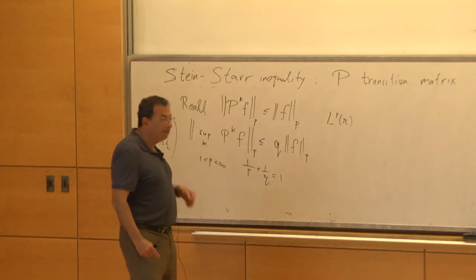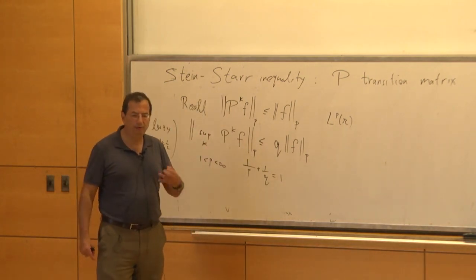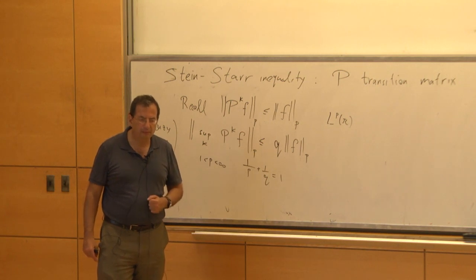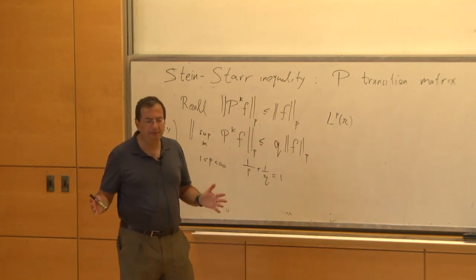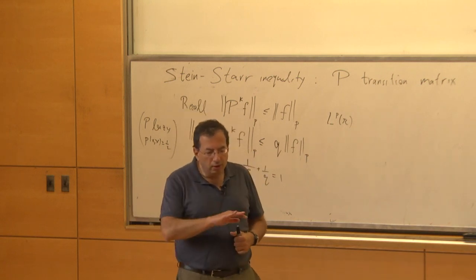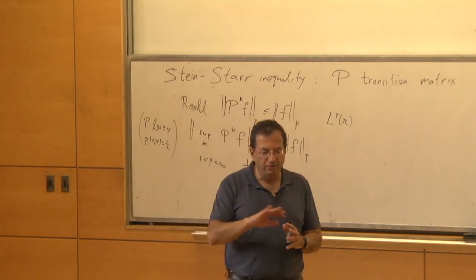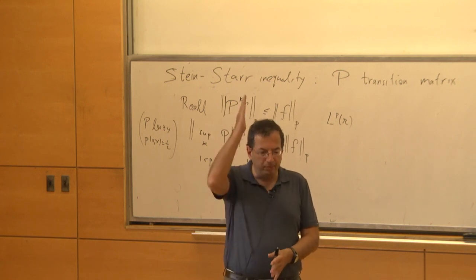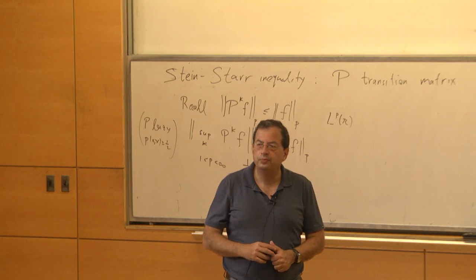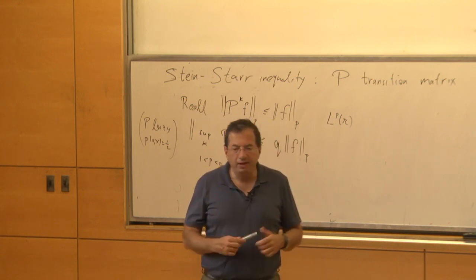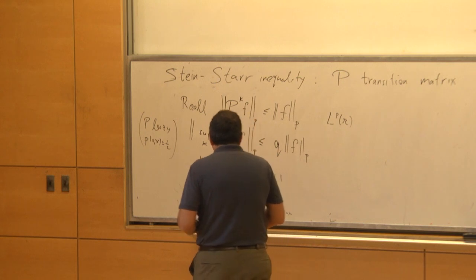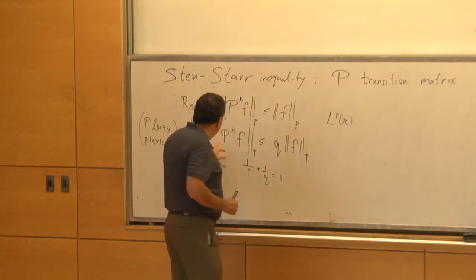The supremum is over K. For each x, you take the supremum over K of P^K F at the point x. It's just a supremum of a family of functions — we're not maximizing each function over x, we're maximizing the family of functions over the parameter K. I find this inequality quite surprising and impressive.